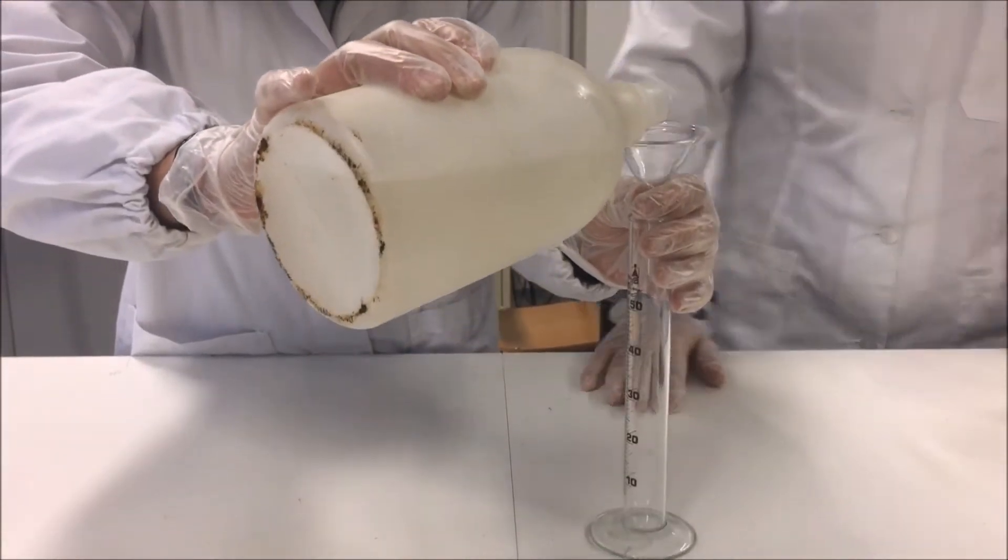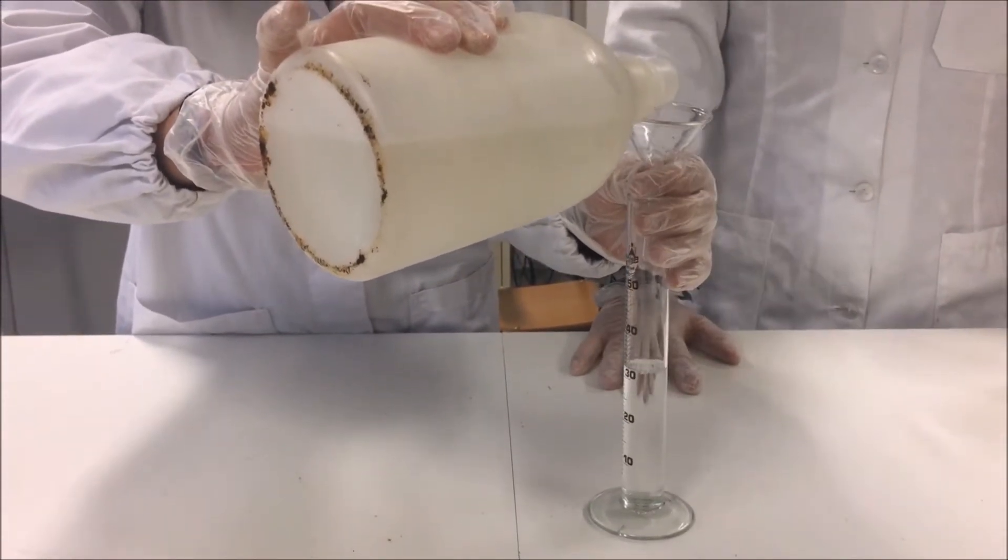Then measure 50 milliliters of acetic acid with the 50 milliliters beaker and the funnel.